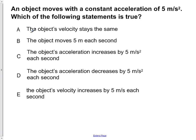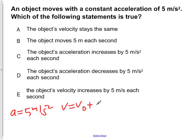For part A, it says that the object's velocity stays the same. We're told that we have a constant acceleration of 5 meters per second squared. If that's so, our acceleration dictates that our velocity is changing by the first kinematic equation: V equals V naught plus AT. If we have an acceleration, then our final velocity is not going to be the same as our initial velocity. So choice A is not true.